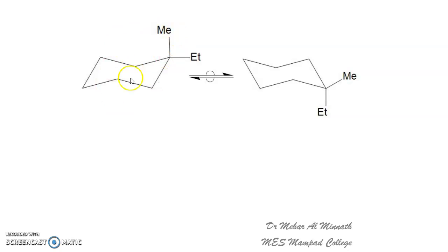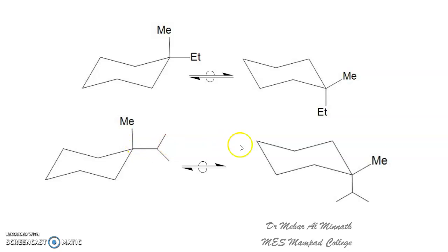So the first conformer with ethyl equatorial will be more stable. The same is the case if we have an isopropyl group along with a methyl group — isopropyl prefers to occupy the equatorial position. We have seen this when discussing mono-substituted cyclohexanes: bulky groups become the anchoring group, fixing a particular conformer and making the molecule rigid. The tertiary butyl group always occupies the equatorial position, and even isopropyl prefers equatorial. The bulkier the group, the more it tends to occupy the equatorial position to avoid 1,3-diaxial interaction.